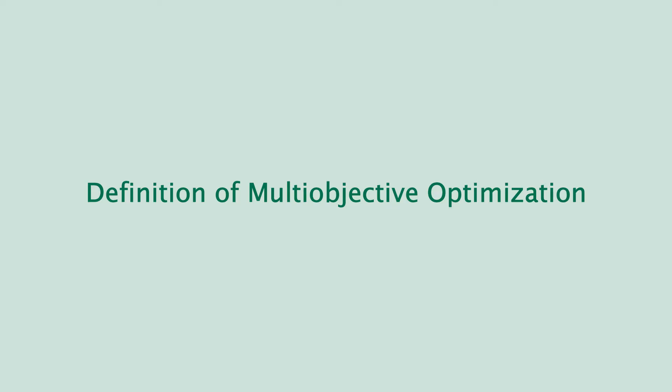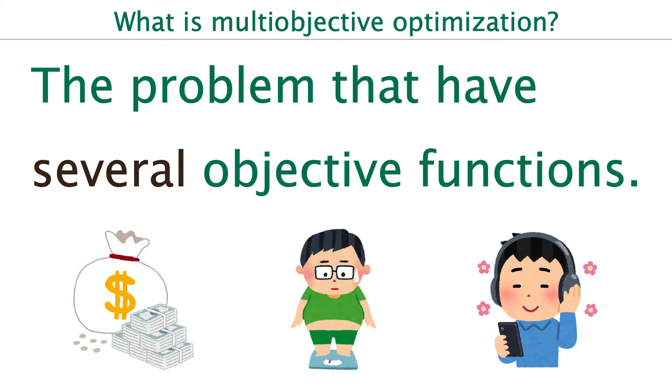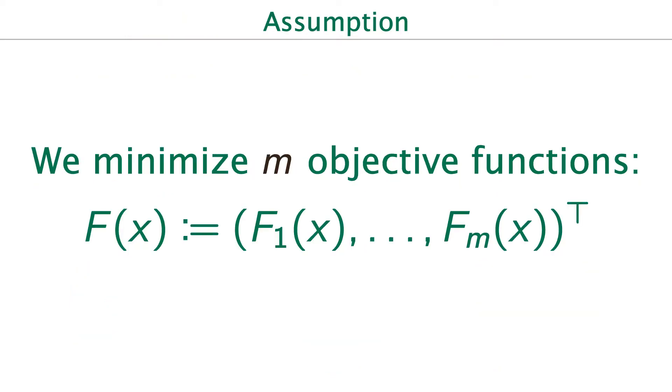First, let's define multi-objective optimization. Multi-objective optimization is literally the problem that have several objective functions. For instance, suppose we minimize M objective functions named F1, ..., Fm.